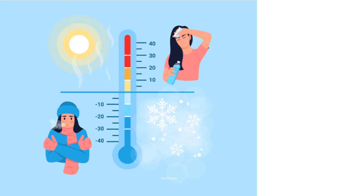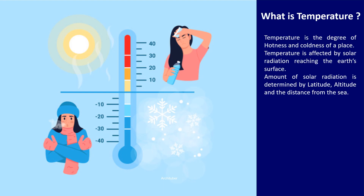Discussing about temperature — in summers the temperature increases and the light also increases, while in winters we have low light, cold winds, and less temperature. Temperature is the degree of hotness and coldness of a place. It is affected by solar radiation reaching the earth's surface. The amount of solar radiation is determined by latitude, altitude and distance from the sea, which we are going to be discussing as well.